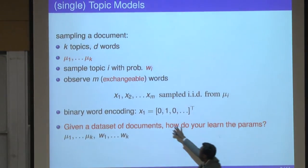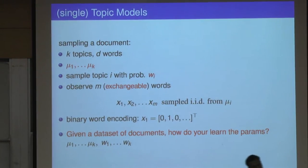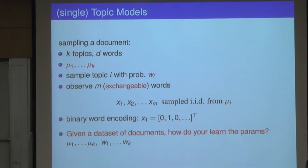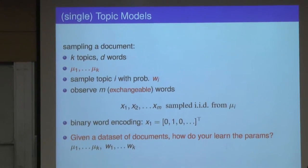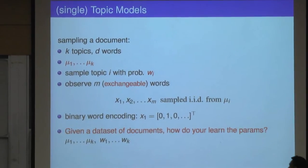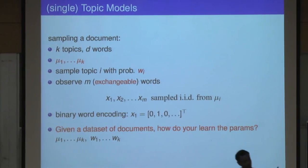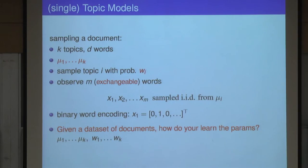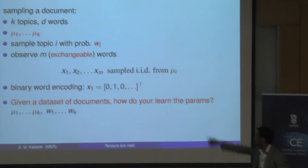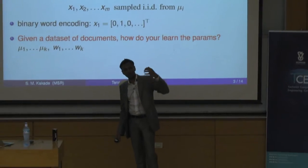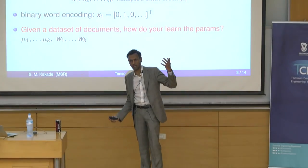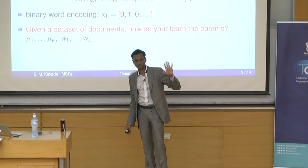For convenience, it's natural to think of our words as binary vectors — just a vector of zeros with an entry at the position where the word occurred. These are sometimes called one-hot encodings. This notation is handy because we can think of our topics as vectors — literally, a topic specifies a distribution over words. The topic vectors mu_1 through mu_k are just vectors of length d, since there are d words in our vocabulary.